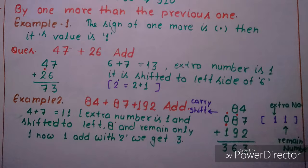Now let us see example two: 84 plus 87 plus 192. We write 84, 87, and 192. We add the units digits: 4 plus 7 plus 2 equals 13. Since there are two digits, the 1 is carried to the left. We write only 3. Then the tens digits: 8 plus 8 plus 9, with 1 carried in.